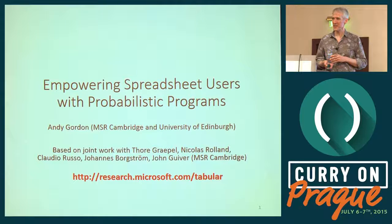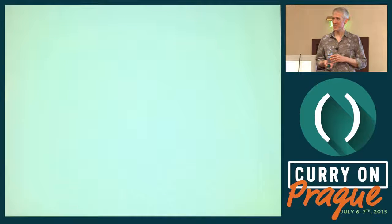An awful lot of the world's data lives in spreadsheets. So this project, codenamed Tabular, is all about taking the research done on probabilistic programming languages and embedding it within a spreadsheet environment, so that people who are not necessarily developers are able to do machine learning using probabilistic programming within the spreadsheet. To begin with, I want to give you an idea of probabilistic programming with a little probability puzzle.